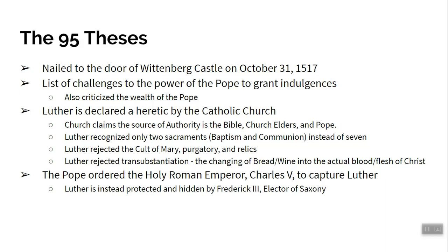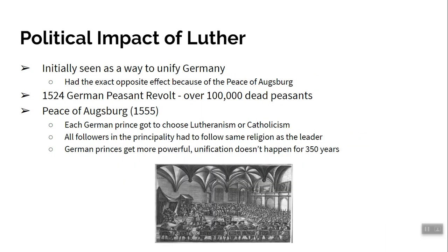The Pope ordered the Holy Roman Emperor Charles V to capture Luther. Unfortunately, Charles V was busy in a war against the Ottoman Empire, and Luther was protected by his friend Frederick III, leader of a small kingdom called Saxony. Initially people in Germany thought Luther's movement would unite Germany, but it had the exact opposite effect — Germany didn't become a country until 1873.